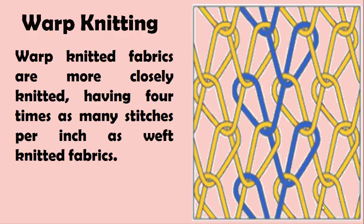Next is warp knitting. This is a type of knitting that can be done by hand or by machine. Warp knitted fabrics are more closely knitted, having four times as many stitches per inch as weft knitted fabrics.